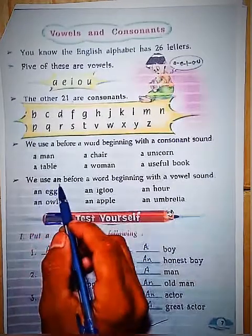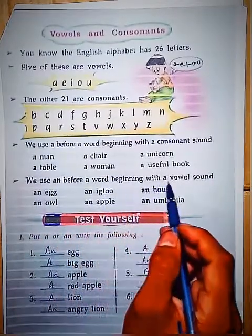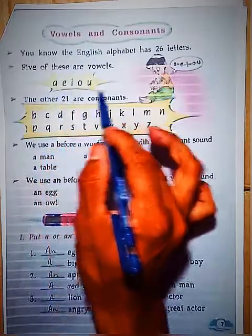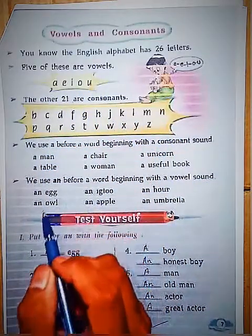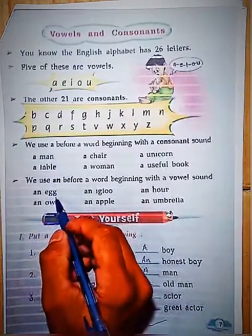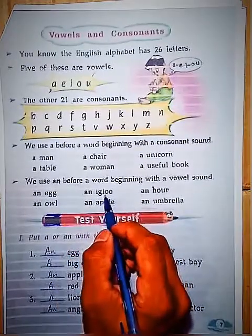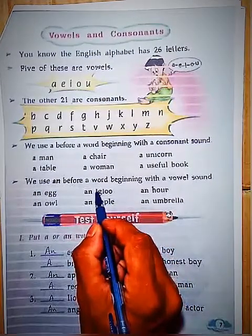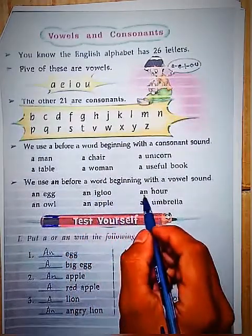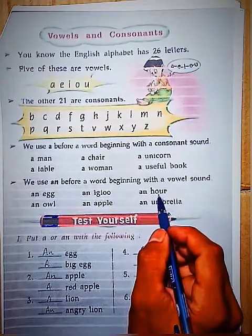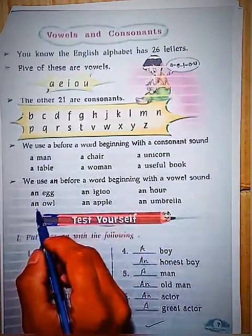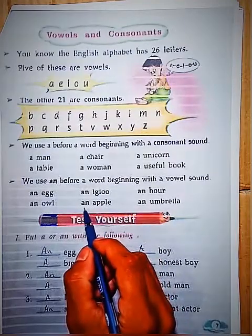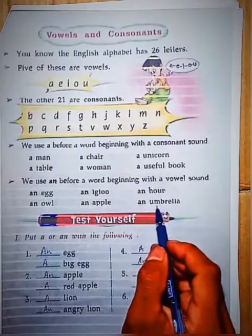Before a word beginning with a vowel sound, we use 'an'. If any of these vowel sounds — a, e, i, o, u — appear at the start, we use 'an'. For example: an egg (एक अंडा), an igloo (एक बर्फ का घर), an Eskimo. Also, 'hour' — here 'h' is silent, so it sounds like 'our', giving a vowel sound, so we say 'an hour'. An apple, an umbrella.